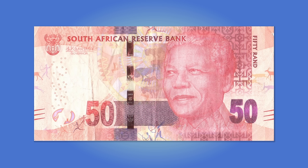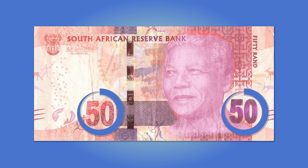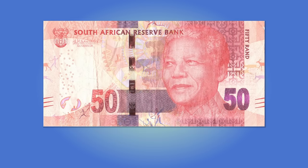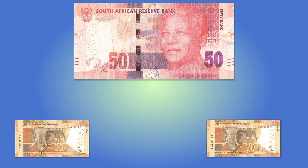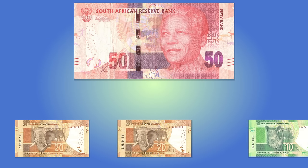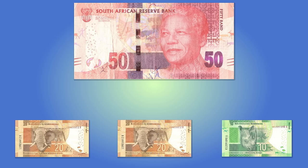On the back it has a picture of Nelson Mandela. You can also see the number 50 on either side of the picture and the words 50 Rand on the top right of the note. A 50 Rand note is equal to two 20 Rand notes and one 10 Rand note.